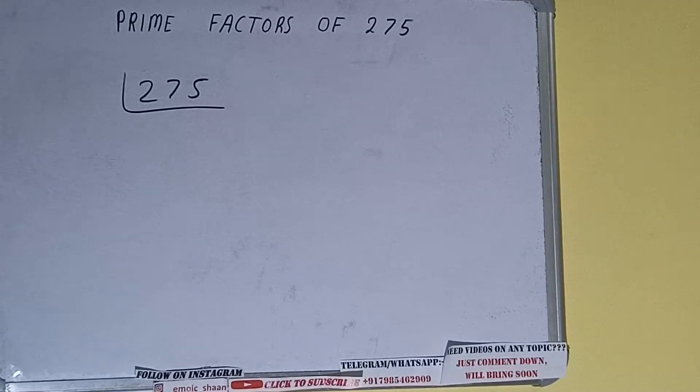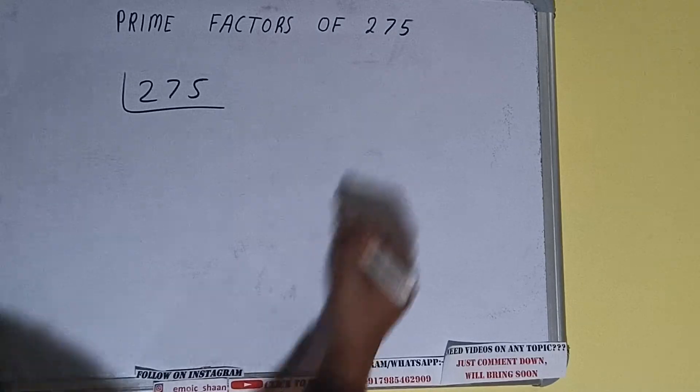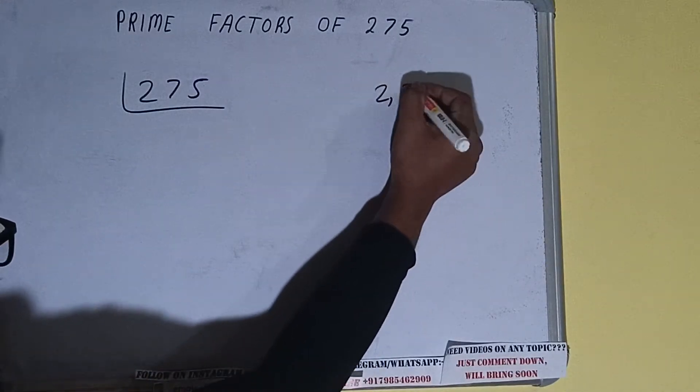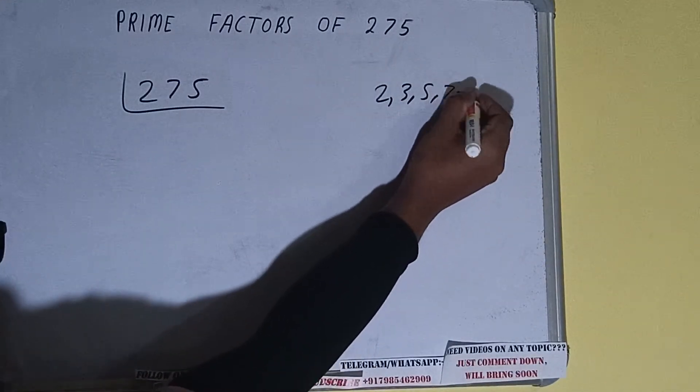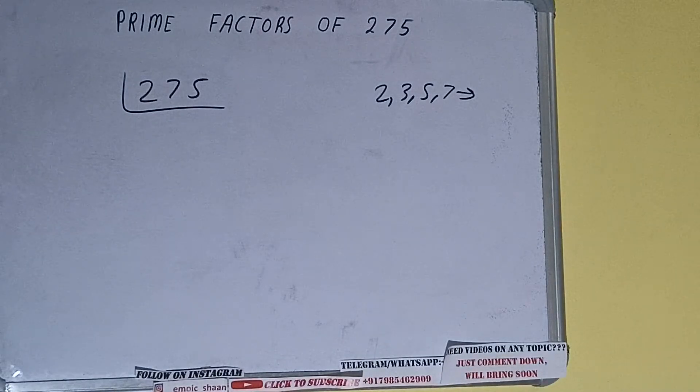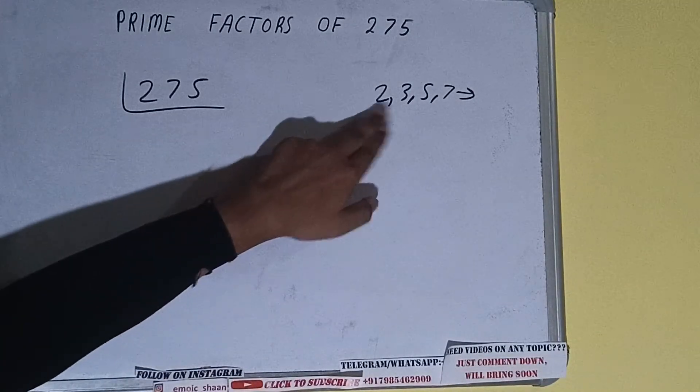Prime numbers are numbers that are divisible by one and the number itself, like two, three, five, seven, and so on. All right, so we'll check with the lowest prime number we have.